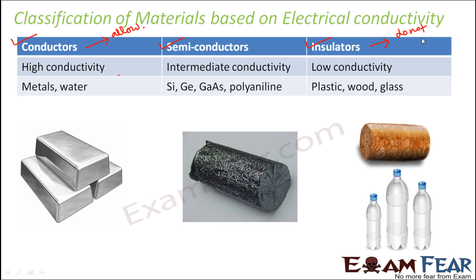Insulators do not allow current to pass through them, so they have very low conductivity. Insulators are also known as poor conductors, while conductors are called good conductors. Some examples of good conductors are metals and water, whereas plastic, wood, and glass are all examples of insulators.